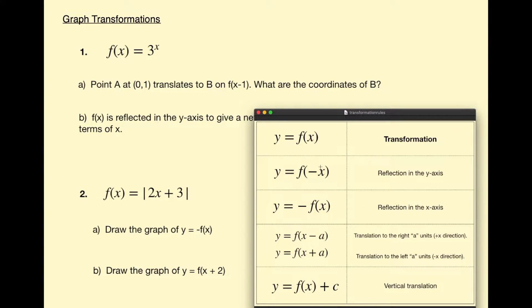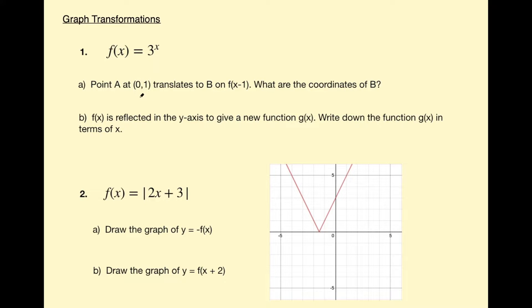Here are the rules. The transformation we care about is f of x take a. So we have f of x take 1, and the effect this has is to translate the graph to the right a units in the positive x direction. That means every point on 3 to the power x has been shifted to the right 1 unit. So for point A, we add 1 to the x coordinate — point B is at (1, 1). Similarly, the point (2, 9) would shift to (3, 9).